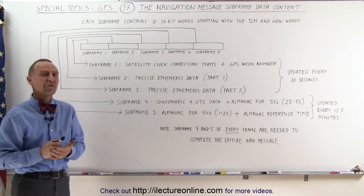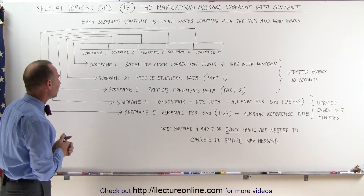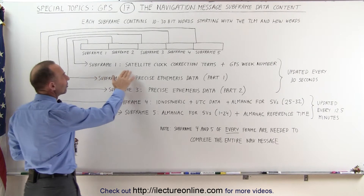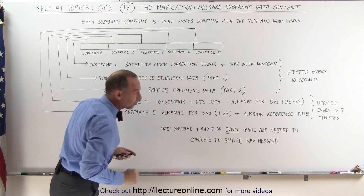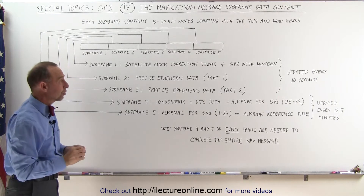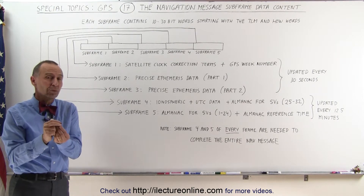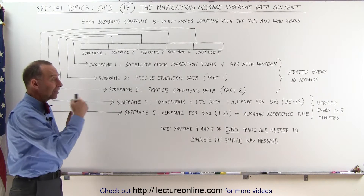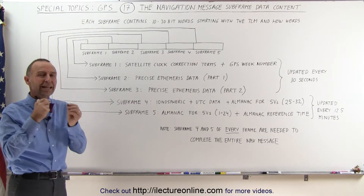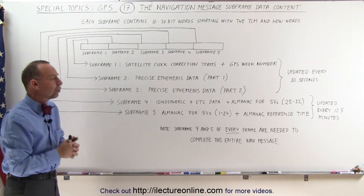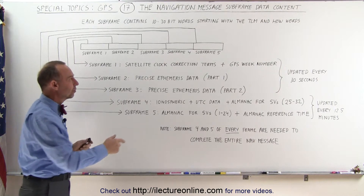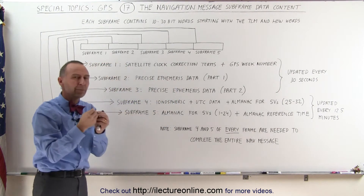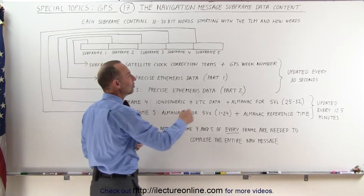So what is in those five subframes for every frame? The first subframe contains the satellite clock correction terms. Those are extremely important. If it wasn't for the correction terms, the difference between the GPS receiver clock and the satellite clock would be too great to get an accurate position with the receiver.